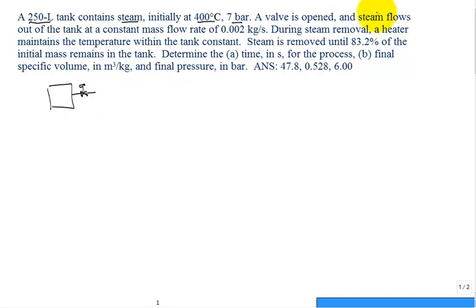And it's opened and steam flows out of the tank at a constant mass flow rate. Maybe I just sketch a little steam coming out with the mass flow rate coming out of 0.002 kilograms per second. During the steam removal, a heater maintains the temperature within the tank to be constant. So you can think about putting a little heater here and then the temperature remains constant. And the steam is removed until 83.2% of the initial mass remains in the tank.